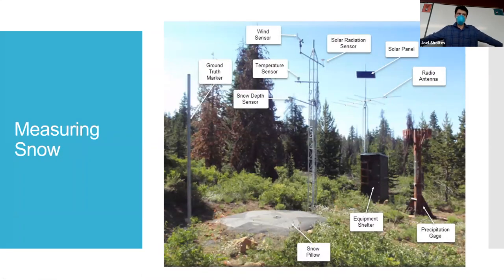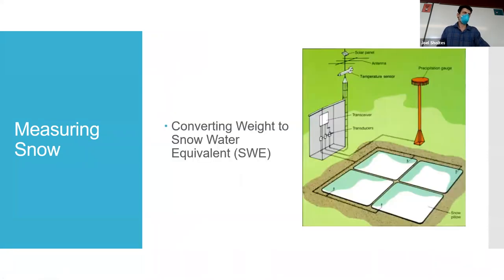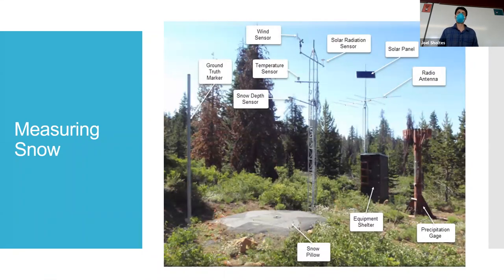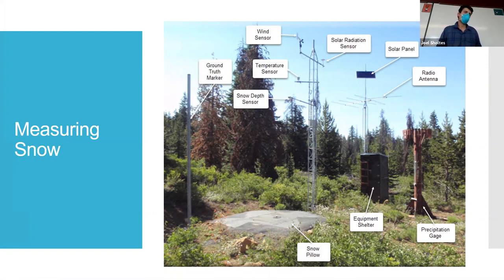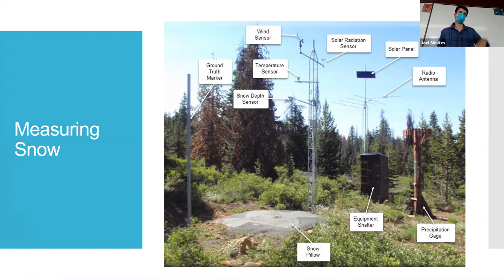Let's talk about how we measure snow. This is a SNOTEL site — SNOTEL stands for S-N-O-T-E-L, snow telemetry; telemetry just refers to communication. This particular site is actually up on the Grand Mesa. It has a lot of different equipment: a rain gauge for tracking precipitation, a solar panel, a weather station, and a snow depth sensor — an acoustic device that pings and gives you the elevation of the snowpack.